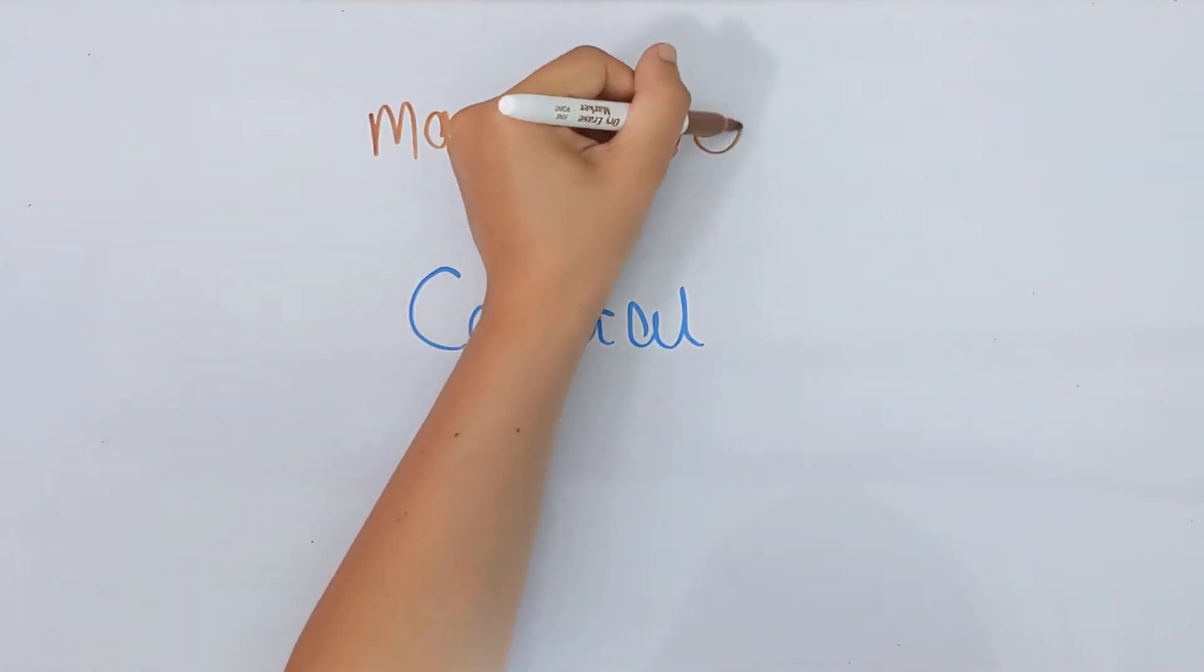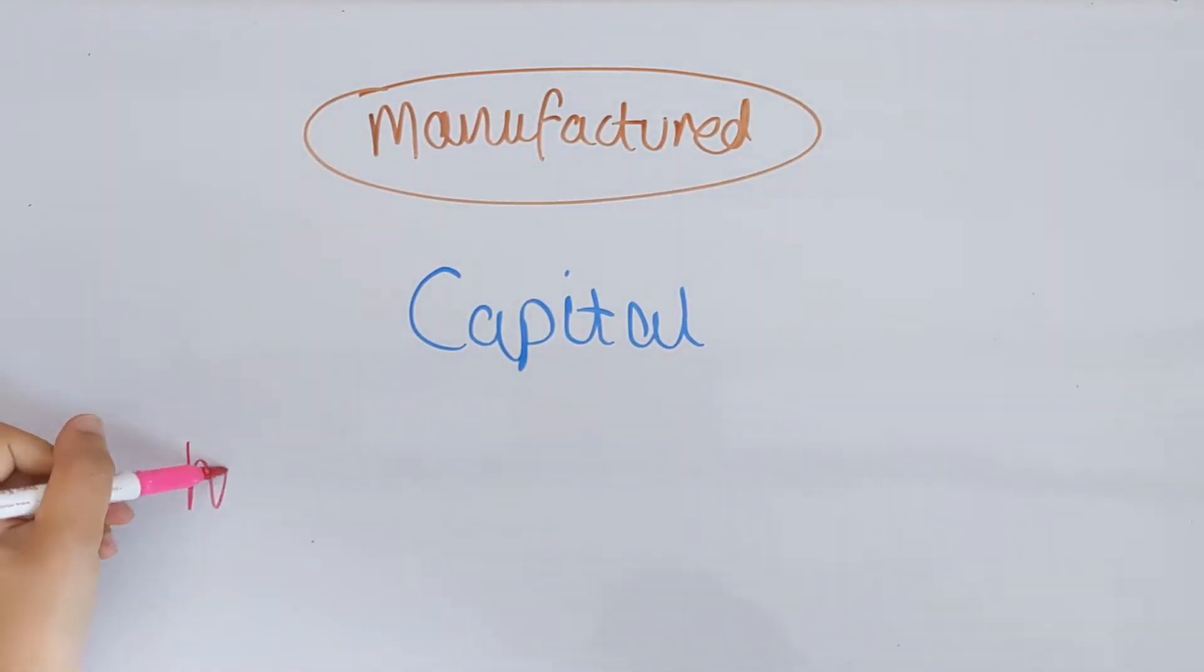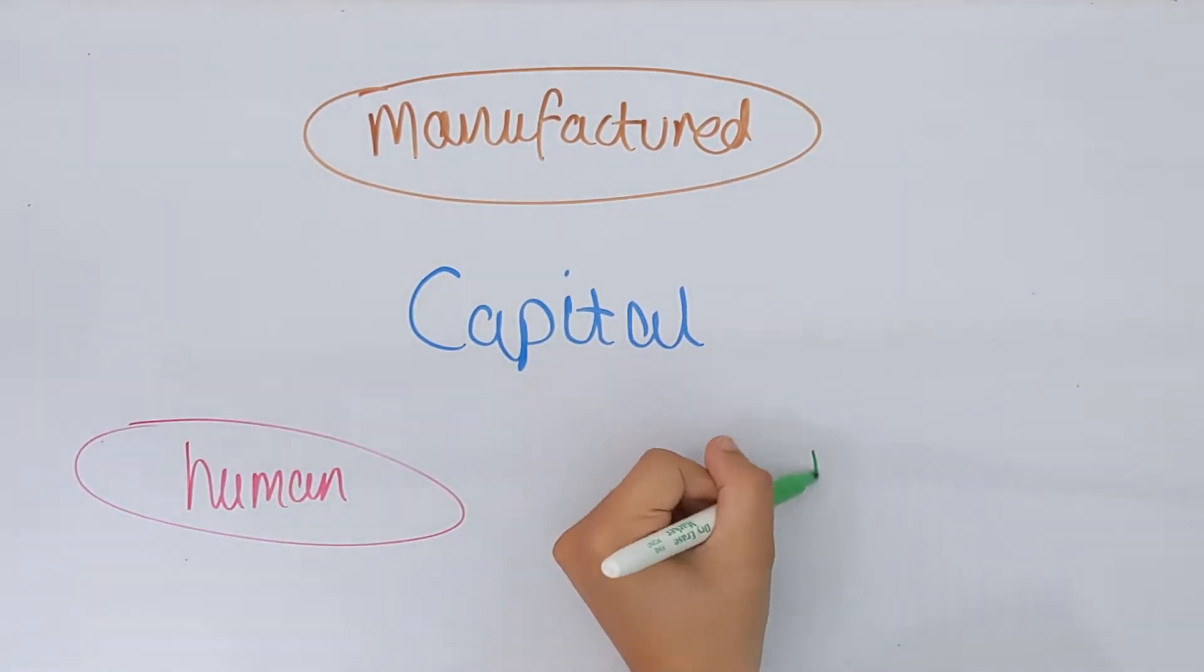Capital can come in different forms such as manufactured capital which can be buildings and machines, human capital which is education and experience that comes with a person, and natural capital.